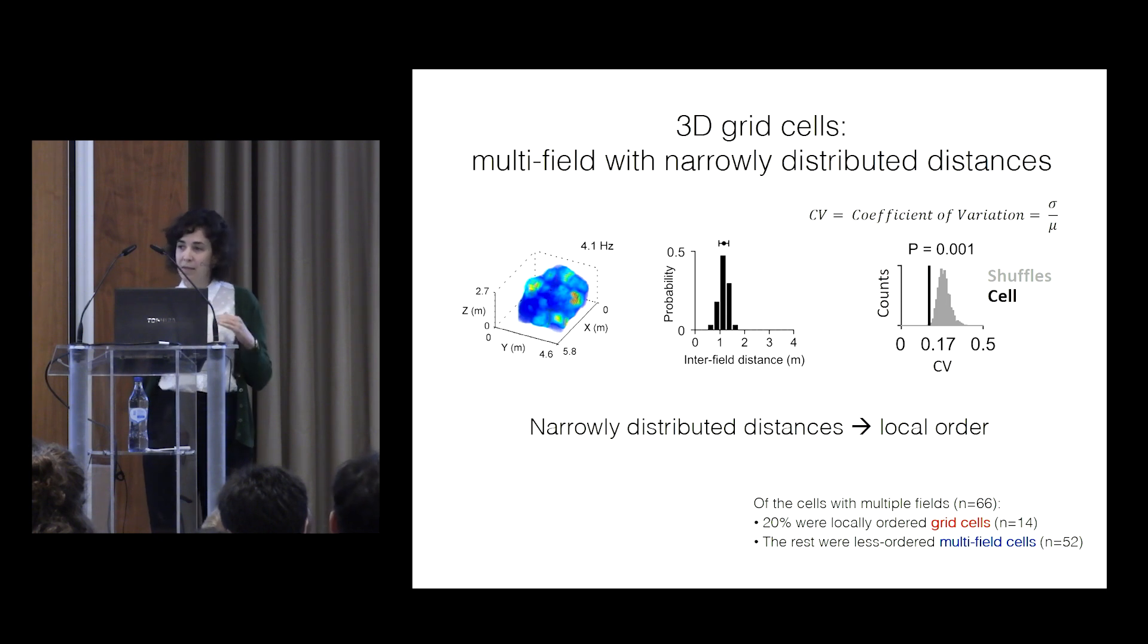So creating a local order in field organization. These cells maintain the basic or the low-level feature property that we see in 2D grid cells of narrowly distributed distances, of these characteristic distances.